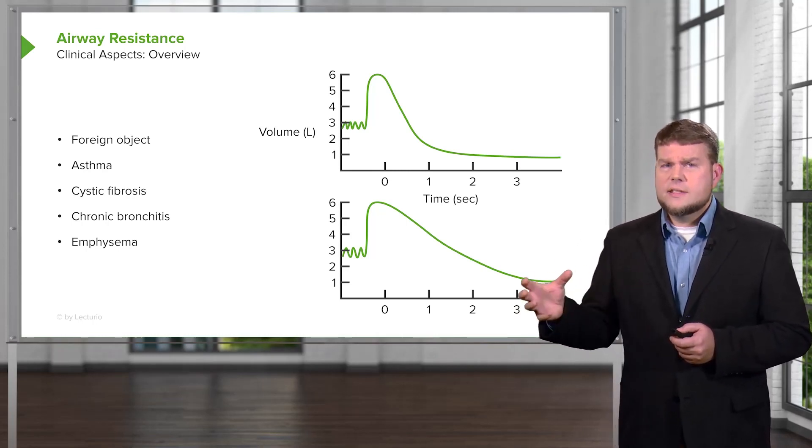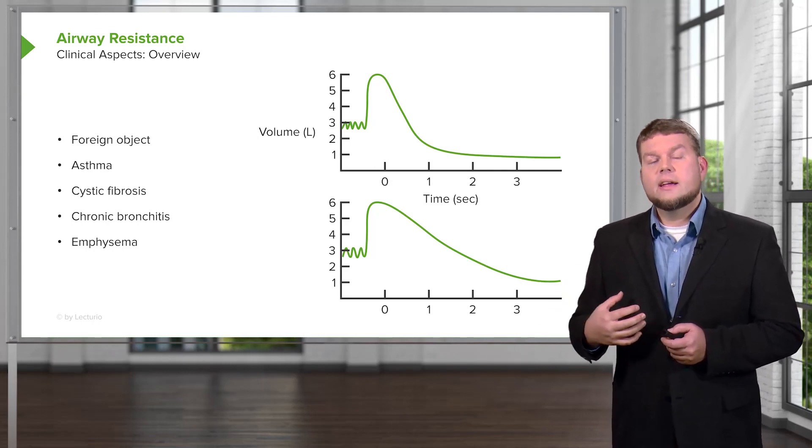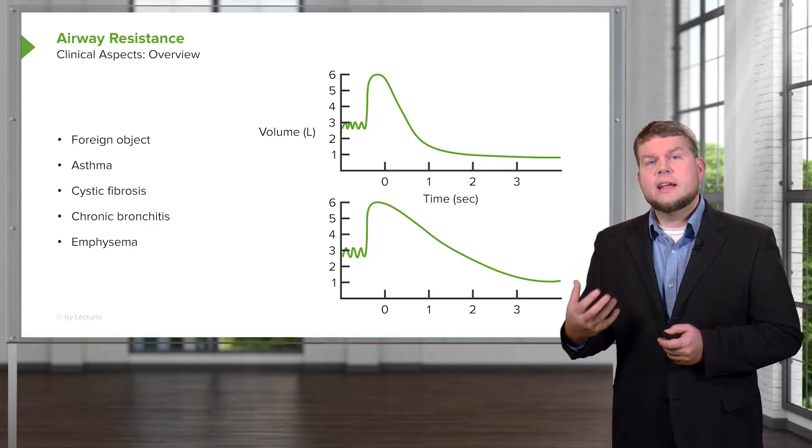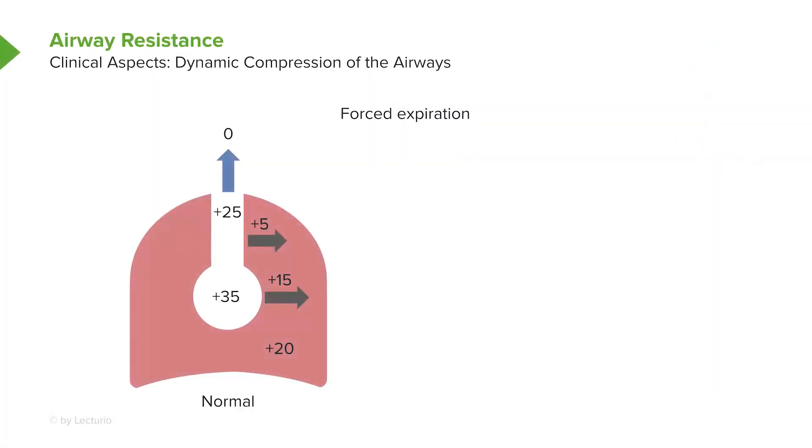But this, instead of having something within the airway, it occurs oftentimes because, in emphysema's case, because you have dynamic compression of the airways. So with dynamic compression of the airways, we have a normal lung over here on the left.